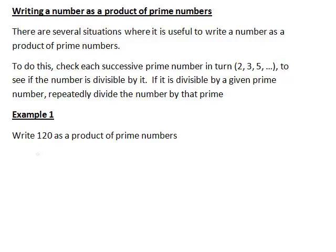Let's look at the number 120 to illustrate this. The first prime number is 2, and 120 is even, so it is divisible by 2. In fact, 120 divided by 2 gives 60. Hence, we rewrite this as 60 times 2.